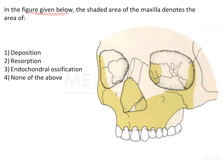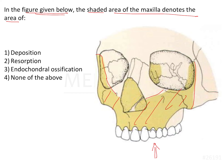In the figure given below, the shaded area of the maxilla denotes the area of — these certain areas that have been marked as a darker yellow. So these shaded areas of the maxilla are representative of deposition, resorption, endochondral ossification, or none of the above?